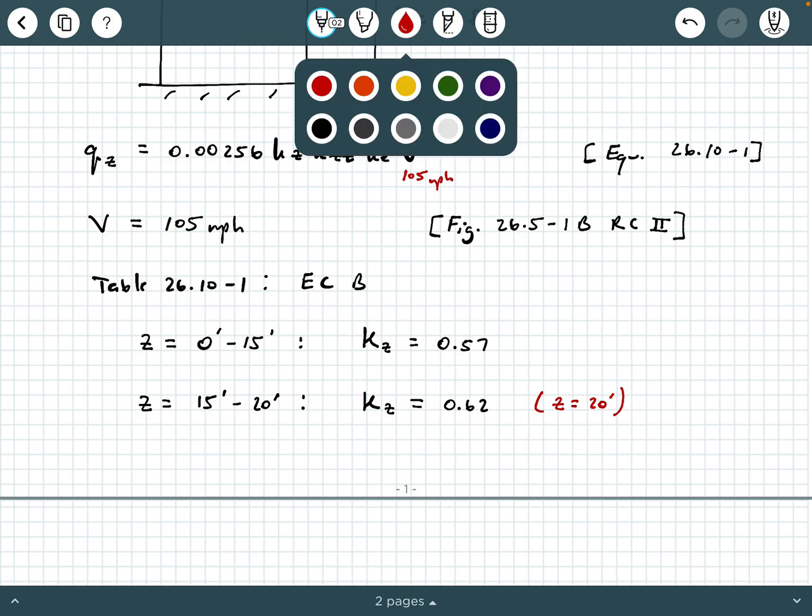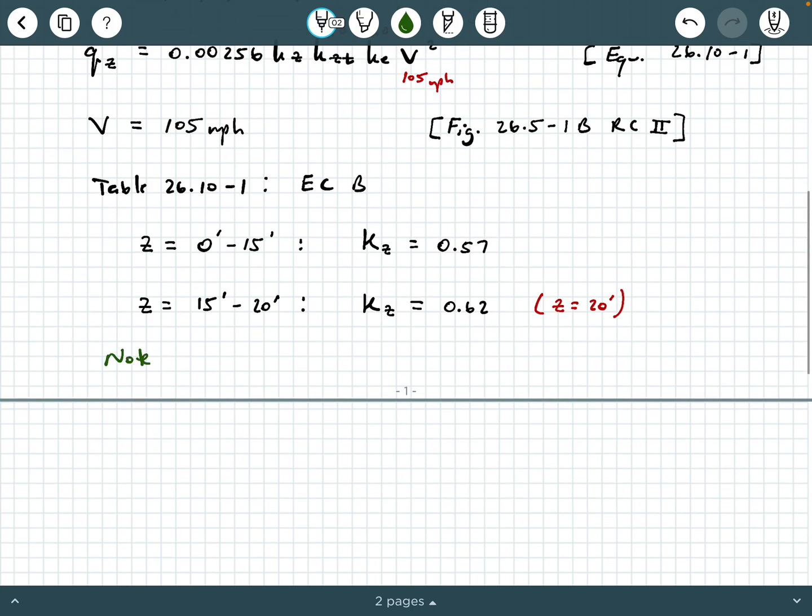Now, the other thing we want to take note of is I'm going to say note the asterisk here on that table. Now, if you look in that table, there's a note at the bottom of the table that says use 0.7 in Chapter 28 for exposure B when Z is less than 30 feet. So do we need to use that here? Well, not really because this particular example does not tell us to do anything regarding a design wind pressure from Chapter 28.